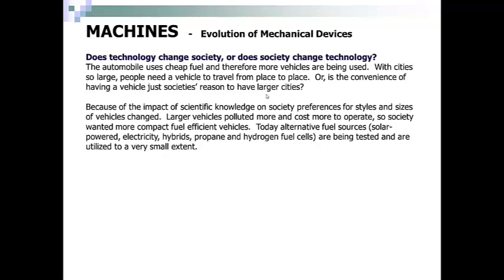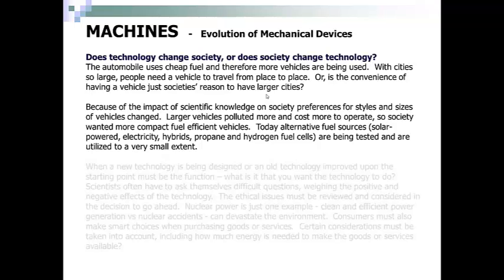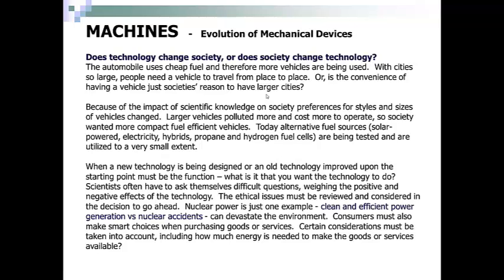Today, alternative fuel sources such as solar power, electricity, hybrids, propane, and hydrogen fuel cells are being tested and utilized to some extent. When a new technology is being designed or an old technology improved upon, the starting point must be the function — what is it that you want the technology to do? Scientists often have to ask themselves difficult questions, weighing the positive and negative effects of the technology. The ethical issues must be reviewed and considered. Nuclear power is just one example: clean and efficient power generation versus nuclear accidents that can devastate the environment.